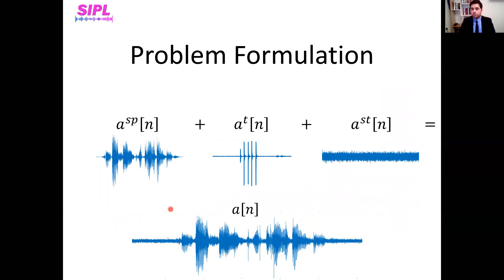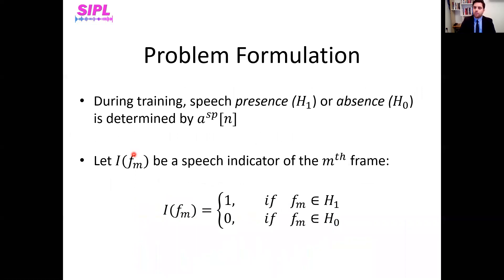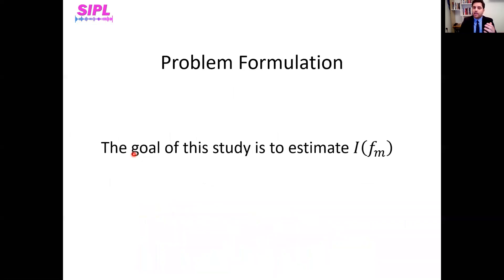If you wish to formulate the problem, first we would decompose the signal that arrives at the microphone into its three components: the speech signal, the transients, and the stationary signal. To process this signal received at the microphone, we scan it with timeframes of 32 milliseconds with 50% overlap. That way, we receive an N-size dataset where each frame has a length of 32 milliseconds. Then we can use, in the training phase, the clean speech signal to determine where speech is present and absent, and define more clearly that the goal of this study is to correctly estimate in each timeframe if speech is present or absent.